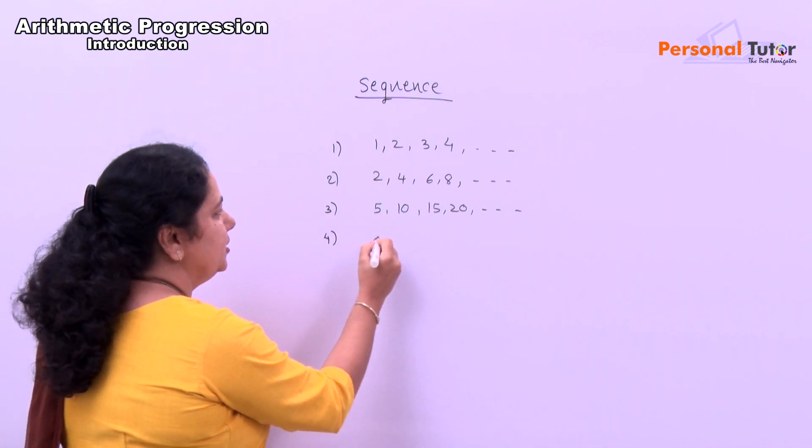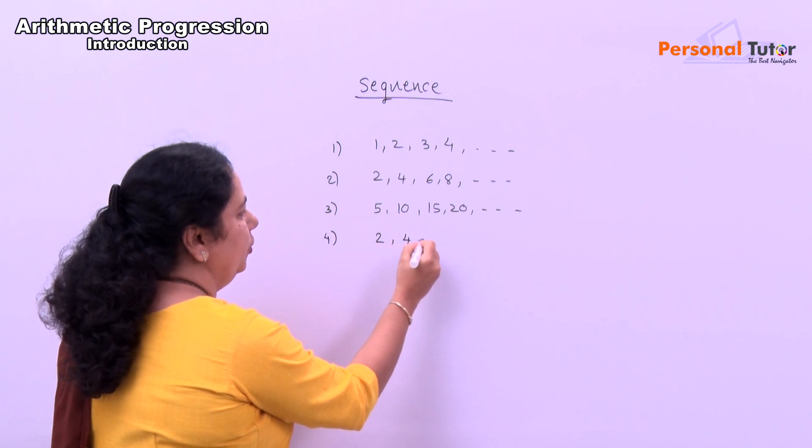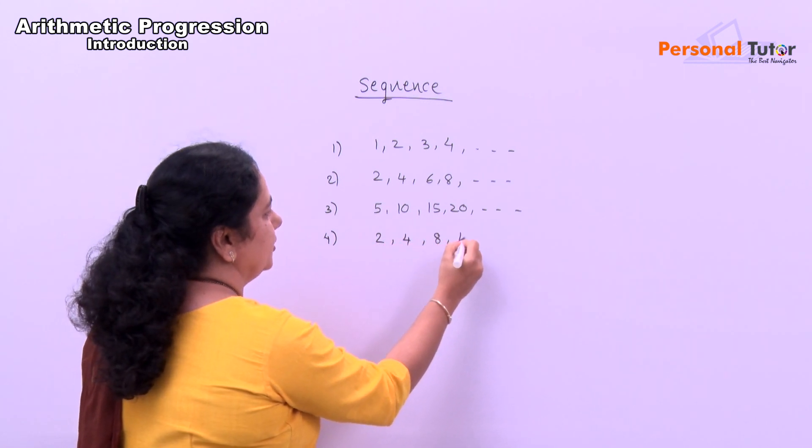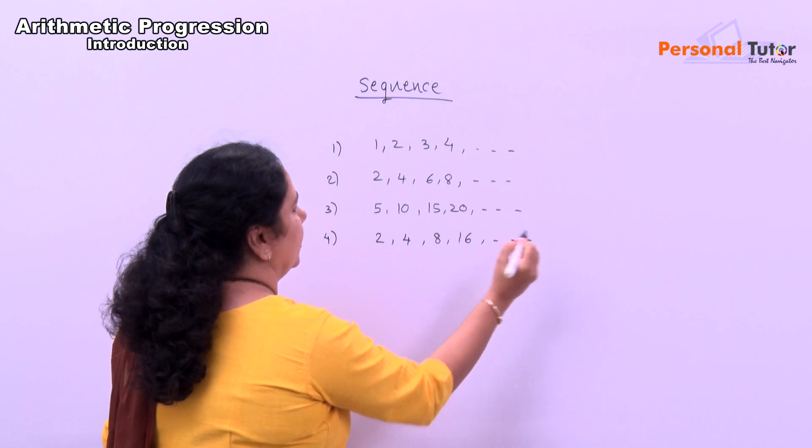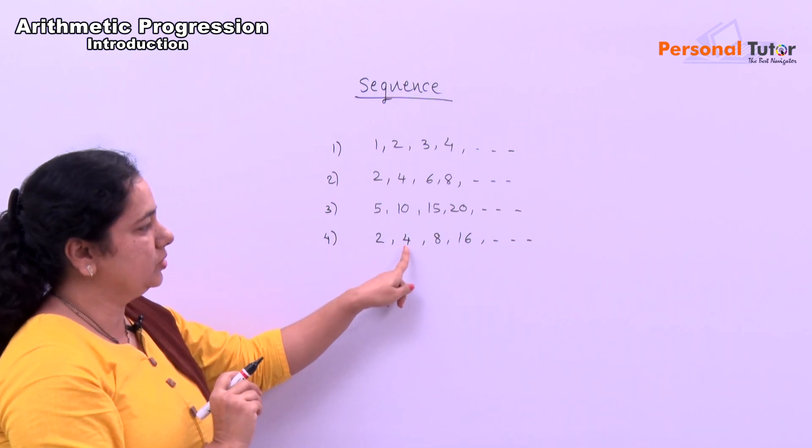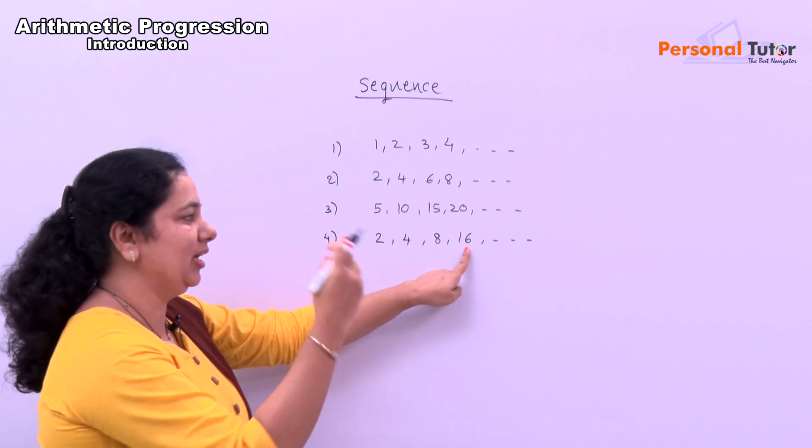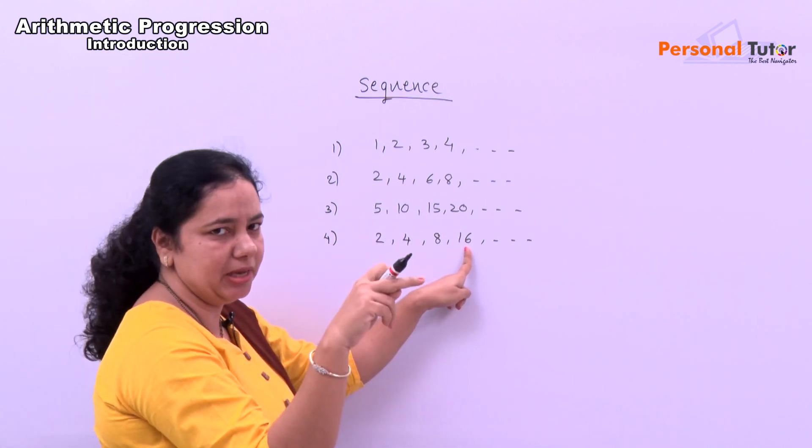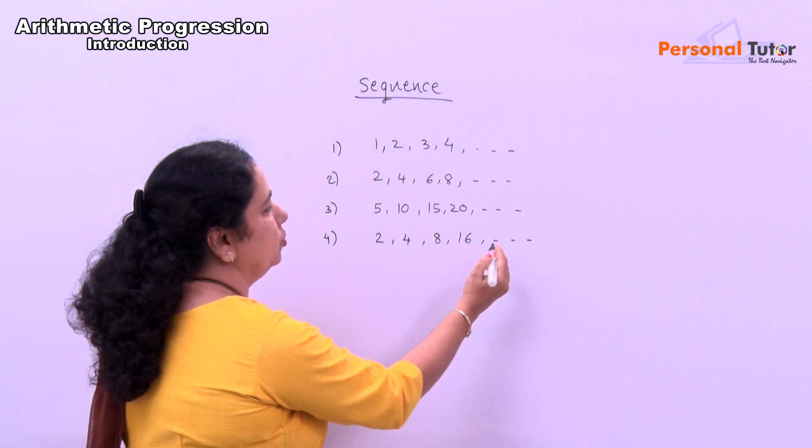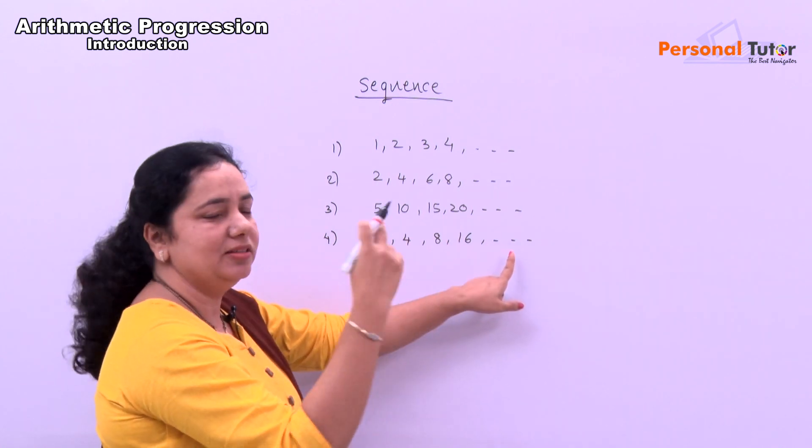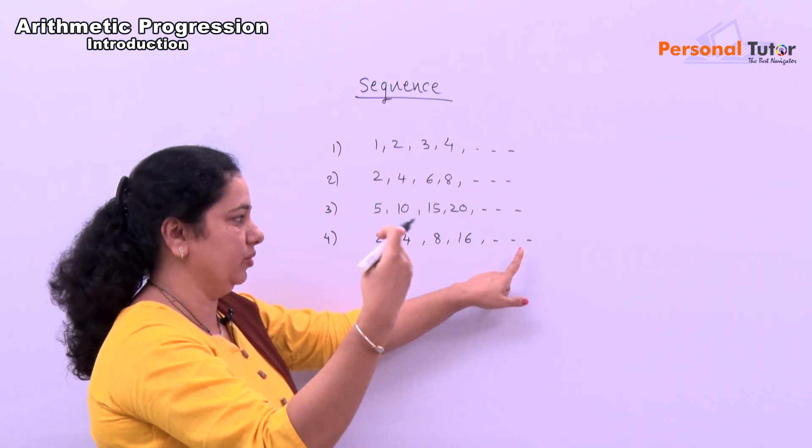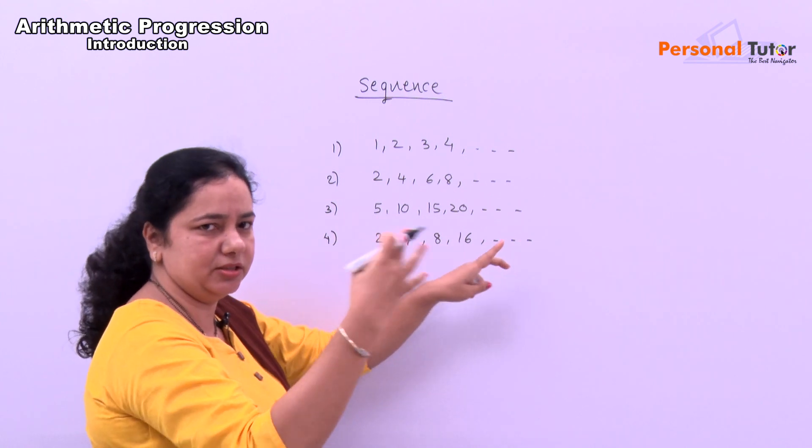Another example is 2, 4, 8, 16. 2, 2's are 4, 4, 2's are 8, 8, 2's are 16. Means next number, while calculating next number, you have to multiply by 2. Therefore, 16 into 2 is 32, then again 32 into 2 is 64, then again 64 into 2. Like this, you have to multiply.